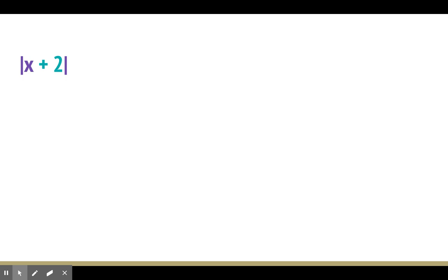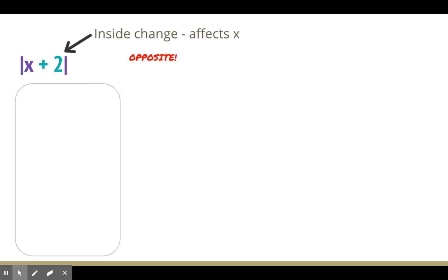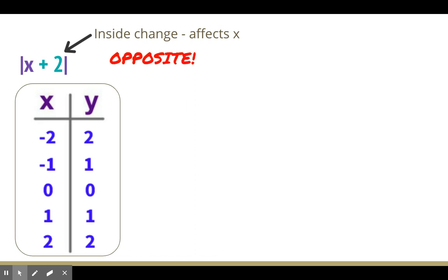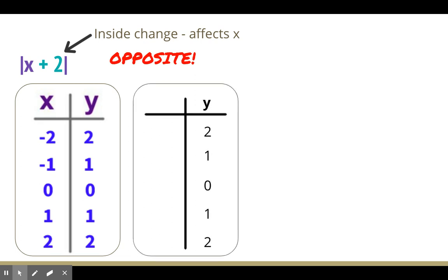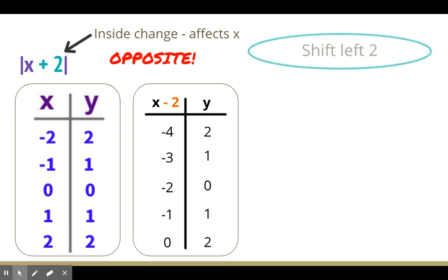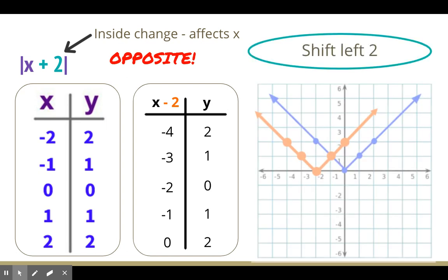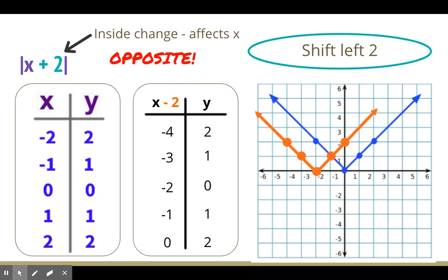Now we have absolute value of x plus 2. Inside changes the x, and it's opposite. We have our parent table and the y's — nothing happens to them. The inside is opposite, so instead of x plus 2, we do x minus 2: (−2)−2=−4, (−1)−2=−3, 0−2=−2, 1−2=−1, 2−2=0. It looks like we're going right, but inside is opposite, so it's a shift left 2. If we plot those points, we can see that from the blue graph to the orange graph, we're shifting left 2 units — every point is moved left 2 from its original.